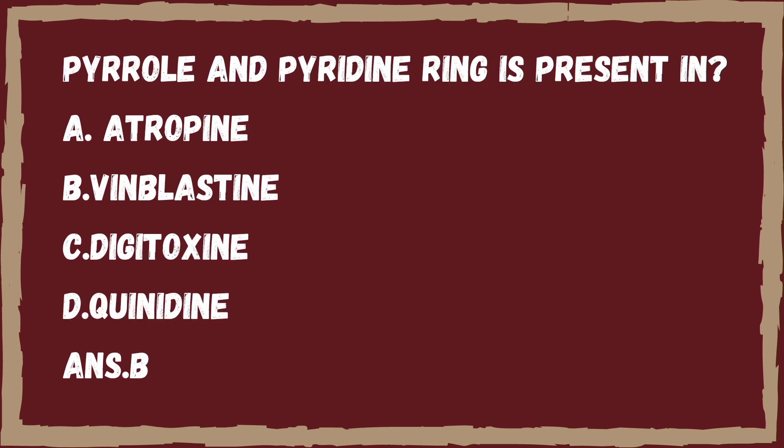Next question: pyrrole and pyridine ring is present in — Option A, atropine. Option B, vinblastine. Option C, digitoxin. Option D, quinidine. The right answer is Option B, that is vinblastine. Vinblastine is a cancer drug mainly used for Hodgkin's disease and belongs to the vinca alkaloids.